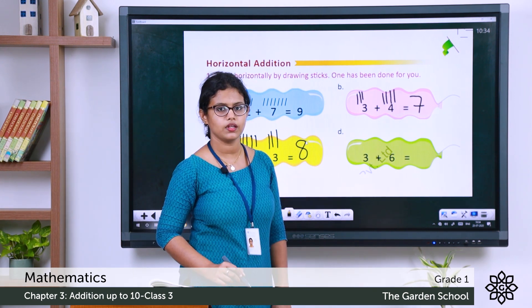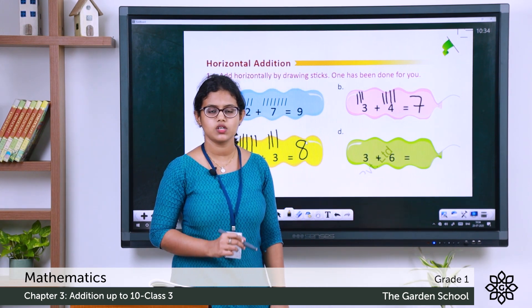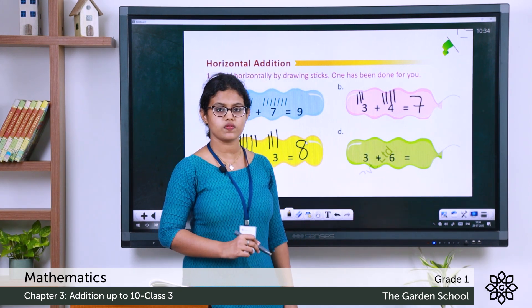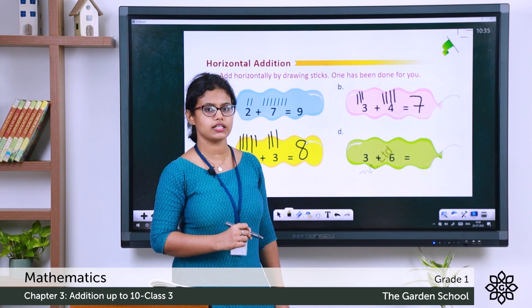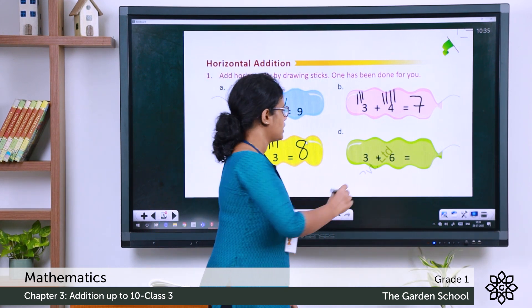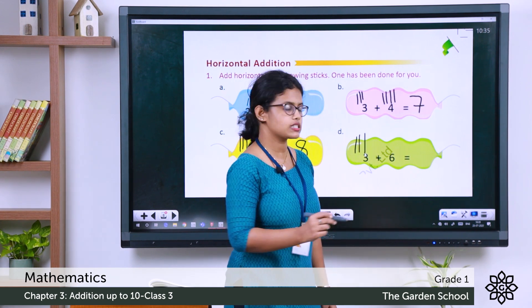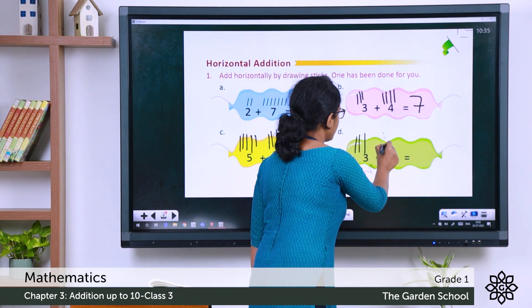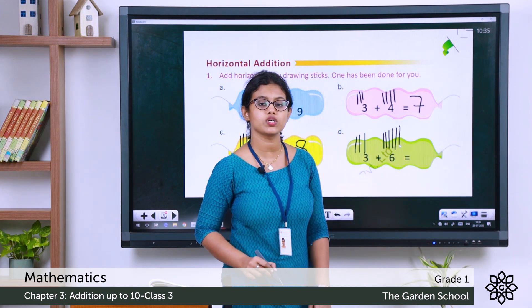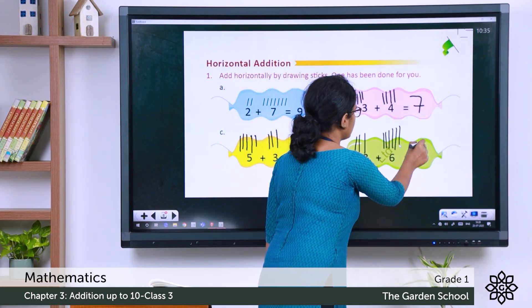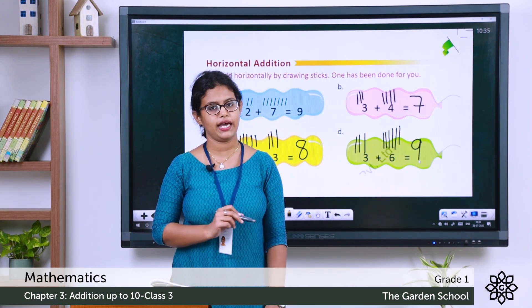Next: 3 plus 6. Draw 3 sticks then 6 sticks and add together. Total: counting gives 9. So 3 plus 6 is 9.